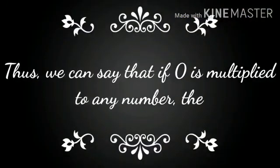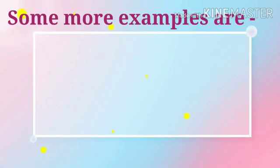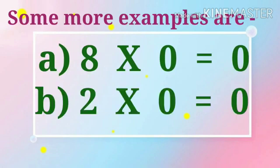Thus we can say that if zero is multiplied to any number, the product is always zero. Some more examples are: eight zeros are zero and two zeros are also zero.